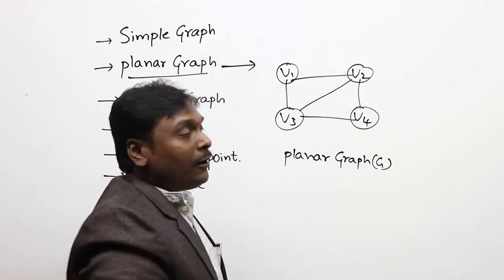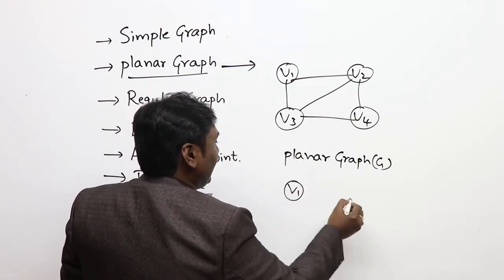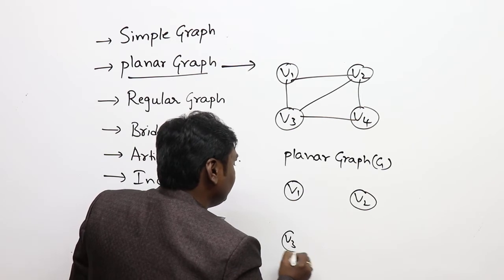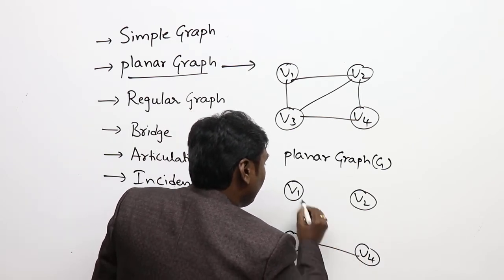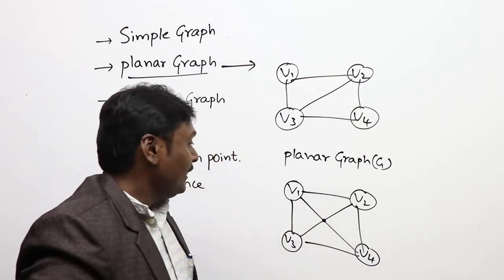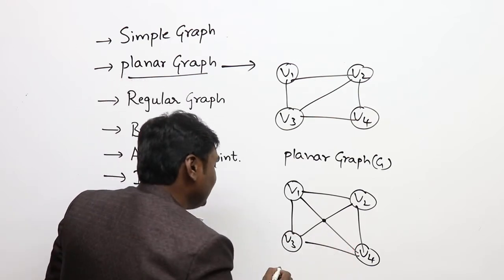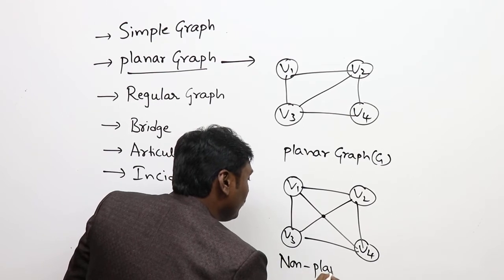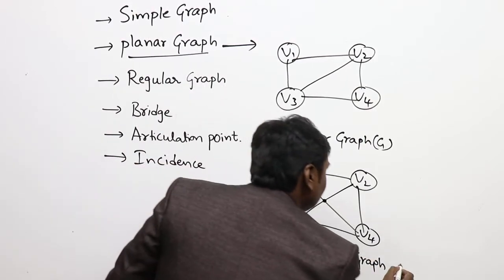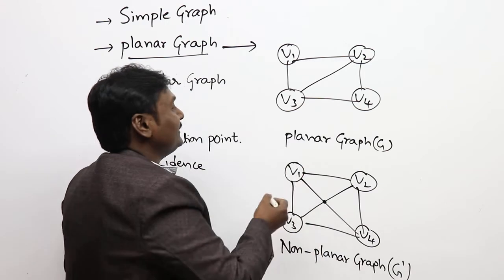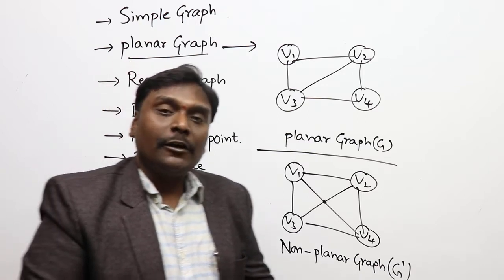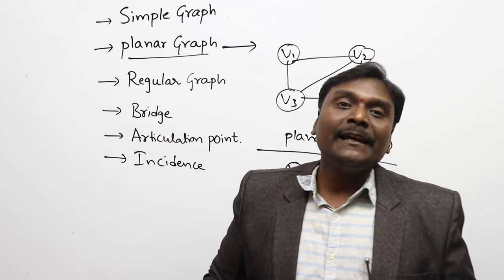For a non-planar graph example, taking the same four vertices v1, v2, v3, v4 but introducing edge intersections results in a non-planar graph G'. This is the difference between a planar and a non-planar graph: a planar graph has no edge intersections, while a non-planar graph has edge intersections.